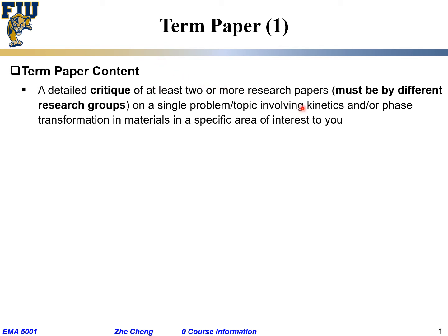And then write a critique about those two papers. Those two papers have to involve either kinetics — how fast the process happens — or phase transformation. One paper could be on silicon phase transformation during lithium-ion battery charge/discharge, and another also on silicon phase transformation from a different group. They must have some similarity and also some differences, similar approaches and different approaches. Carefully examine, compile, contrast, and write a critique about those two papers.